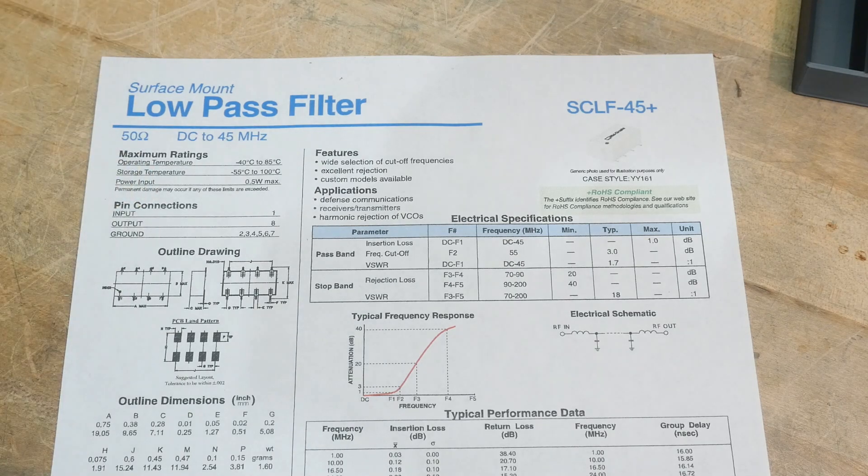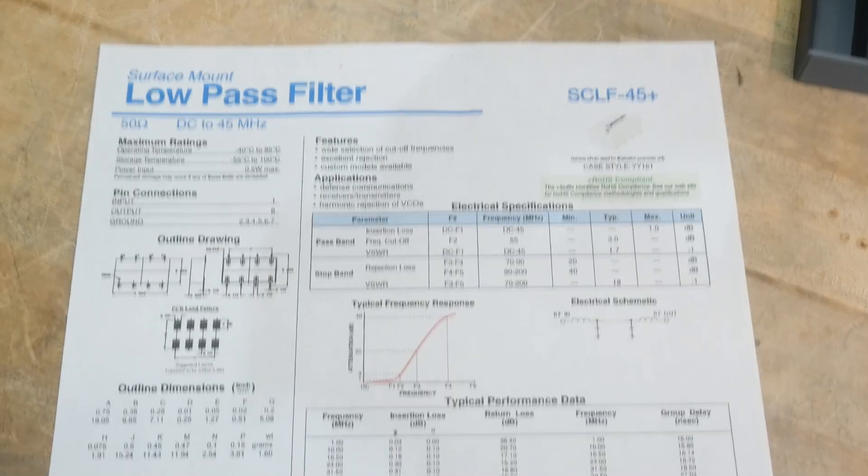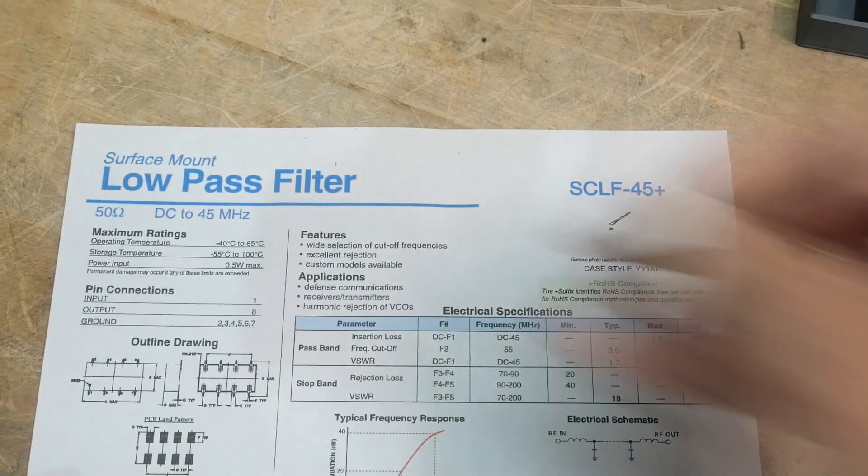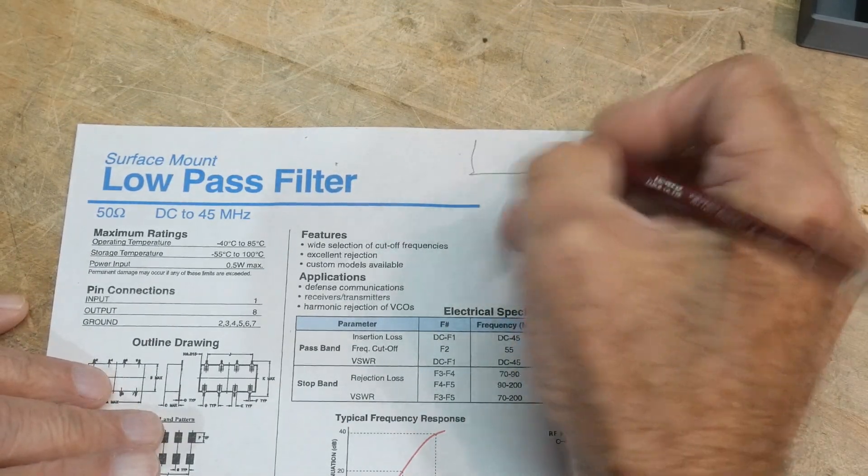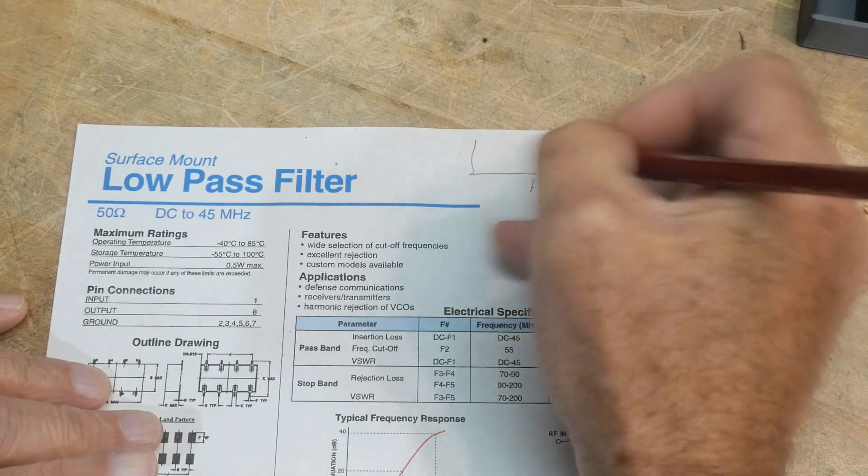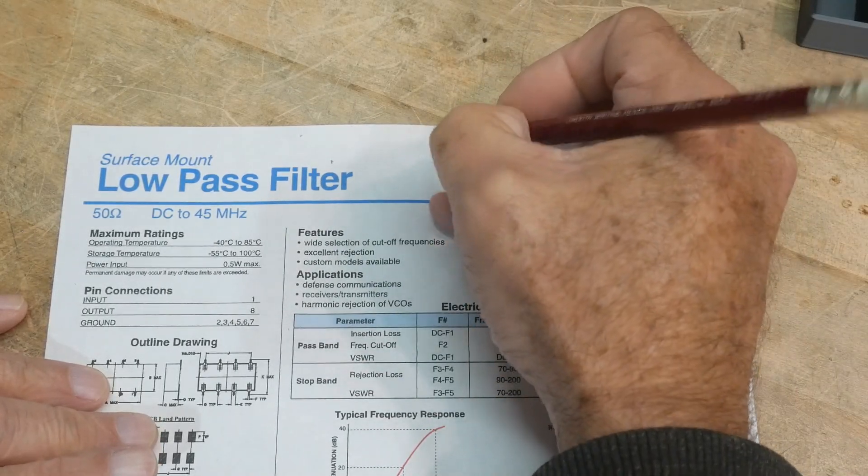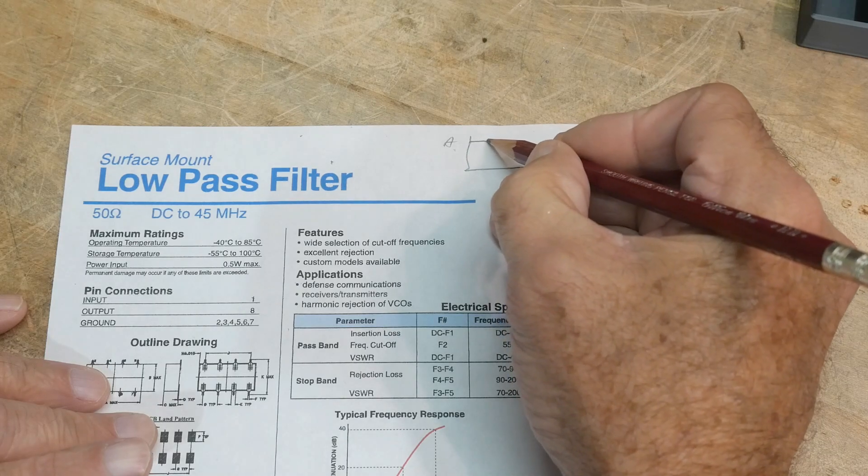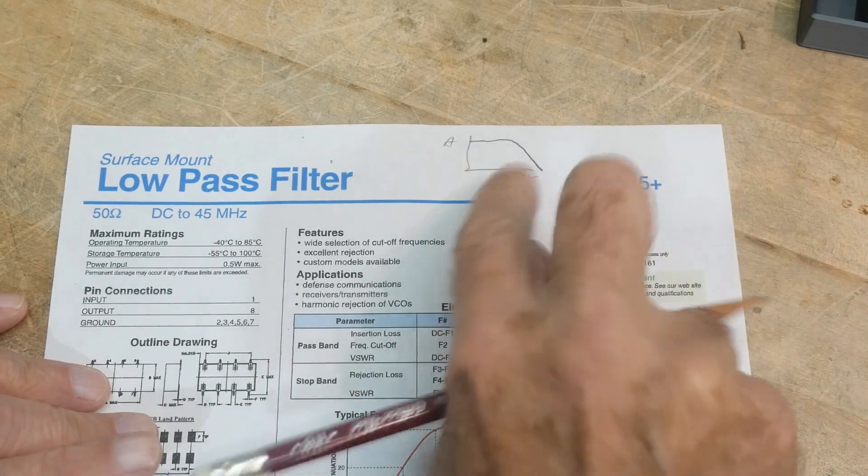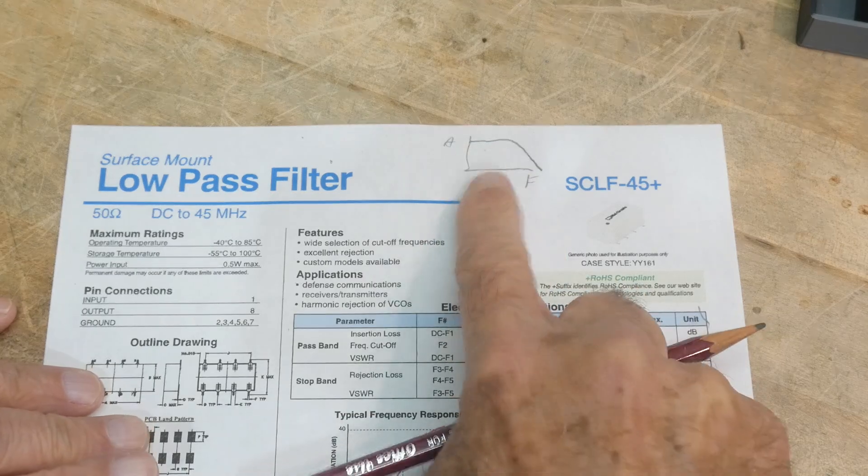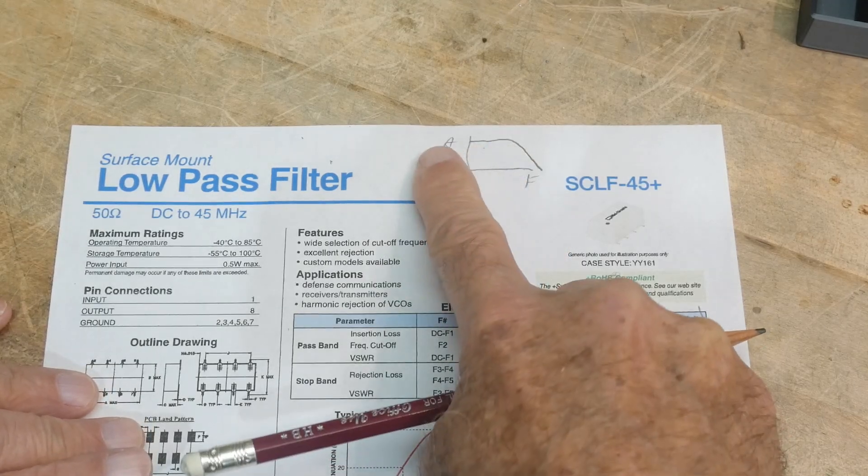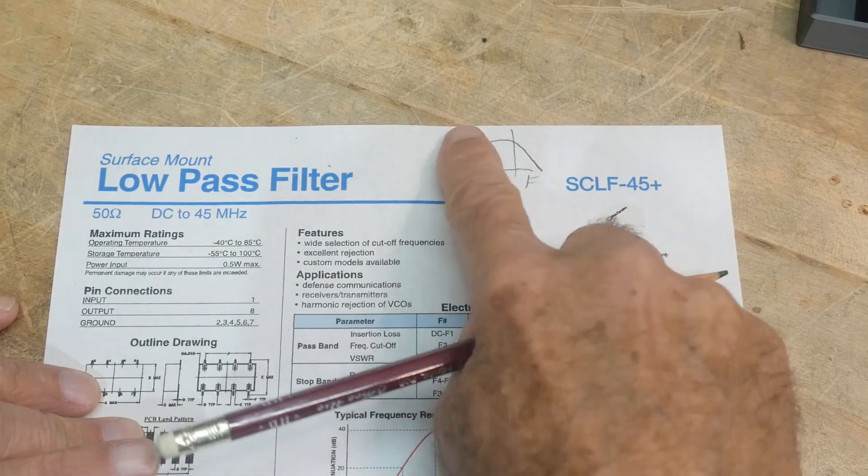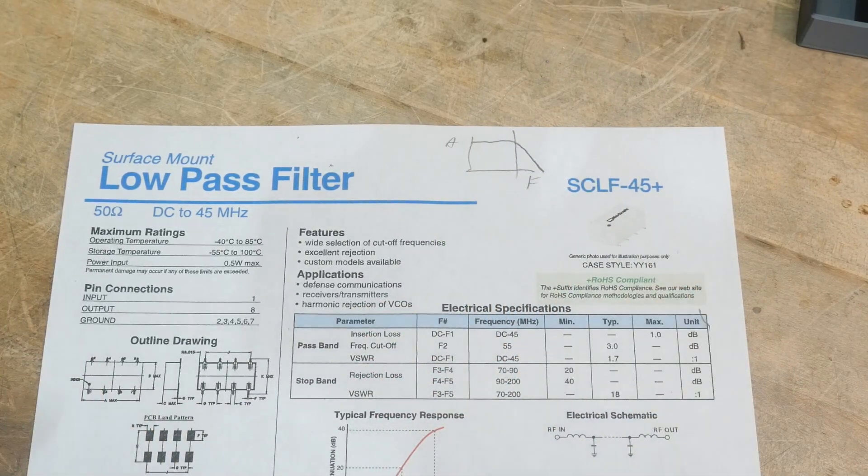So, interestingly, whenever you think about a low-pass filter, you always think about the graph, frequency versus amplitude, right? And low-pass means that it's passing, and then it'll fall down like this, right? So, this is the shape of the graph that you're expecting to see. It's flat for a while, and I guess 45 megahertz, and then it rolls off after 45 megahertz.